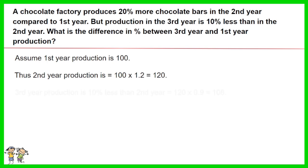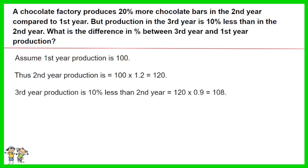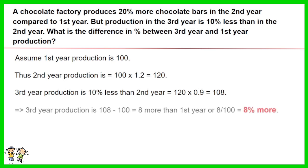Given that the third year production is 10% less than the second year, thus it equals 120 times 0.9, which equals 108 chocolate bars. The third year production is 108 minus 100, which is 8 more than the first year, or 8 over 100, which is 8% more.